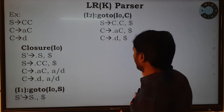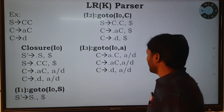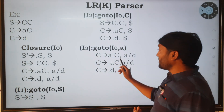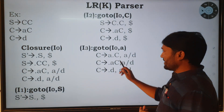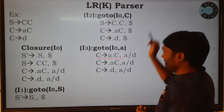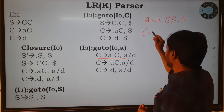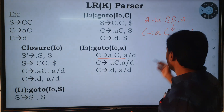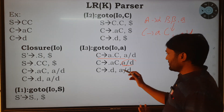Now apply goto(i0, a): shift the dot one position to the right, giving C → a•C with input string a or d. After the dot there is capital C, which has two productions. Add C → •aC and C → •d. Using the formula: β is epsilon, so the lookahead symbols come from the previous production's input strings: a or d.